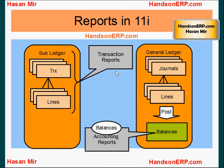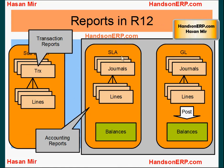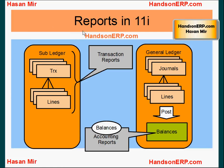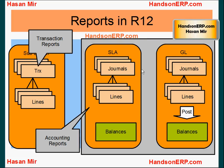In Release 11i, a reconciliation between a subledger and GL would be performed by running transaction reports in the subledger. That would display transaction-level information and balances, so two reports could be compared — that would be your reconciliation. In Release 12, it's not as important to compare your transactions in subledgers with the balances in GL, because now we have subledger accounting holding the true accounting information. In Release 11i, accounting information would be held by the subledger directly; in Release 12, true accounting resides in subledger accounting.